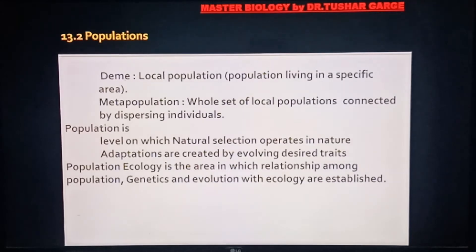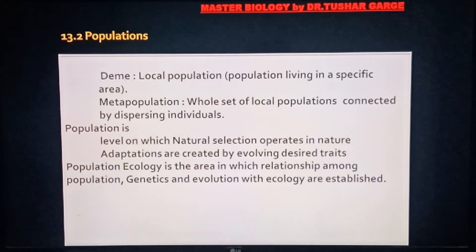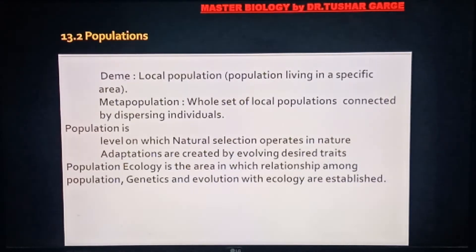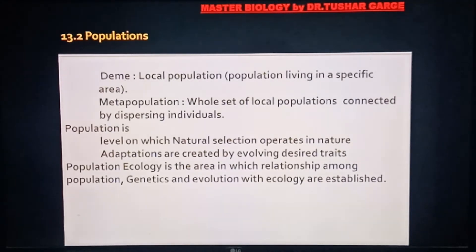एक term आती है — यह केवल local population को signify करने वाली population होती है, जबकि meta population एक local population के पूरे set को कहते हैं जहाँ से individuals का dispersal यानी विकीरणन लगातार जारी रहता है। तो इस तरीके से population वो level है जिस पर nature में natural selection की process होती रहती है और adaptations create होते रहते हैं।